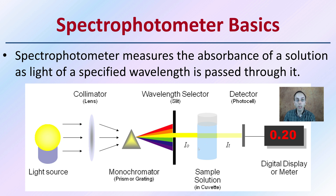We then have our sample solution in a cuvette, a detector, and a digital display. We're observing what gets passed through. The machine knows what was basically sent, and we're detecting what has passed through that sample.